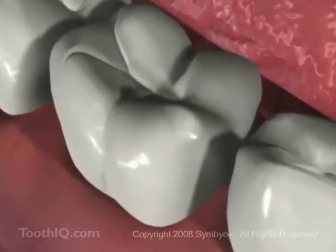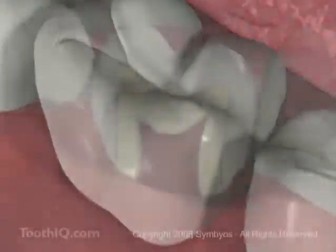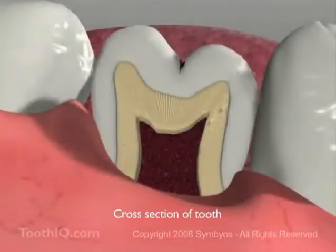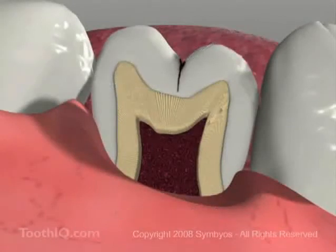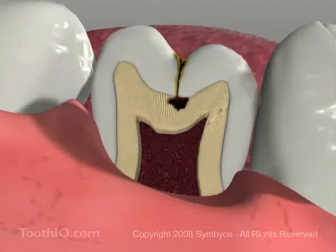Deep pits and fissures are the source of some 80% of tooth cavities. This is mainly because food and bacterial plaque lodge in these tight crevices and are often inaccessible to toothbrush bristles. Plaque acids and enzymes at the base of these grooves cause the tooth enamel to dissolve, eventually leading to cavities.